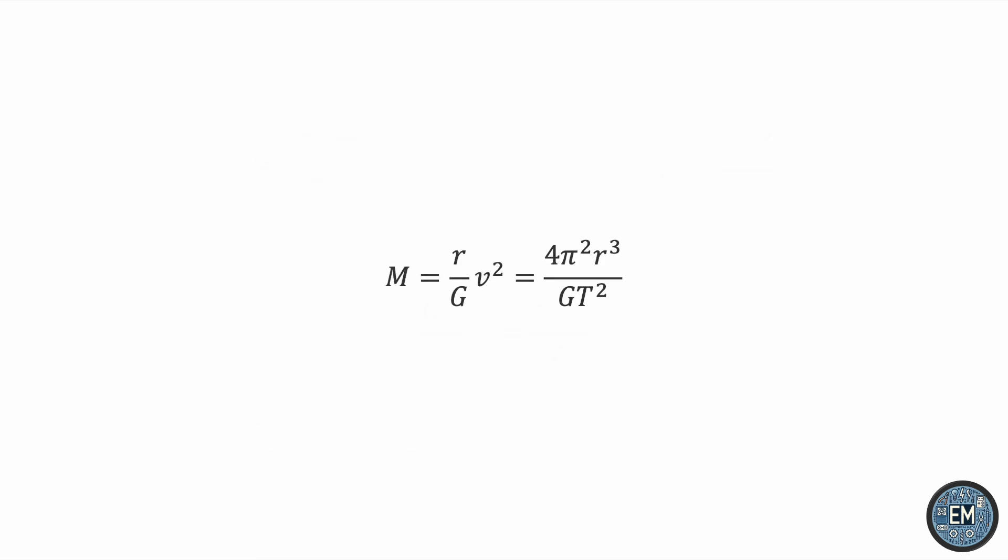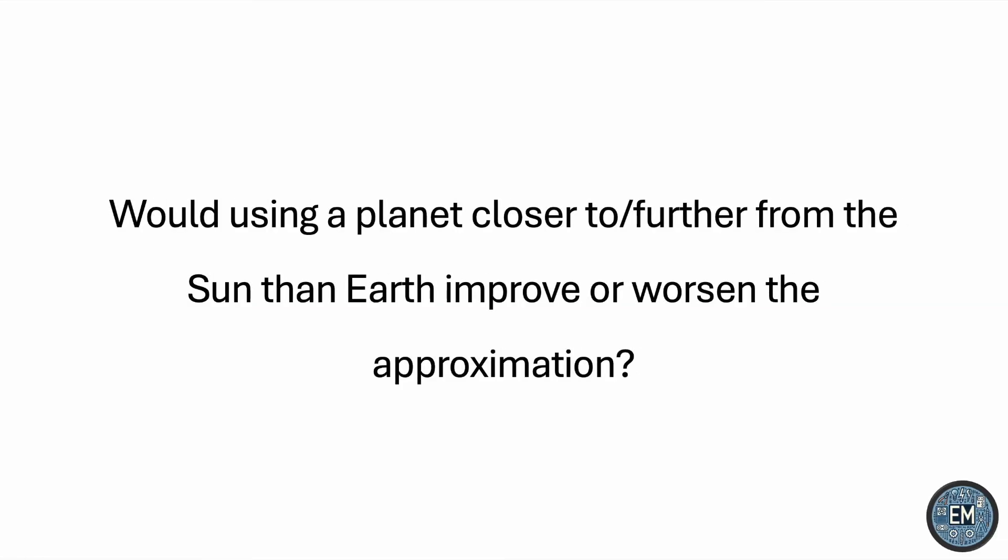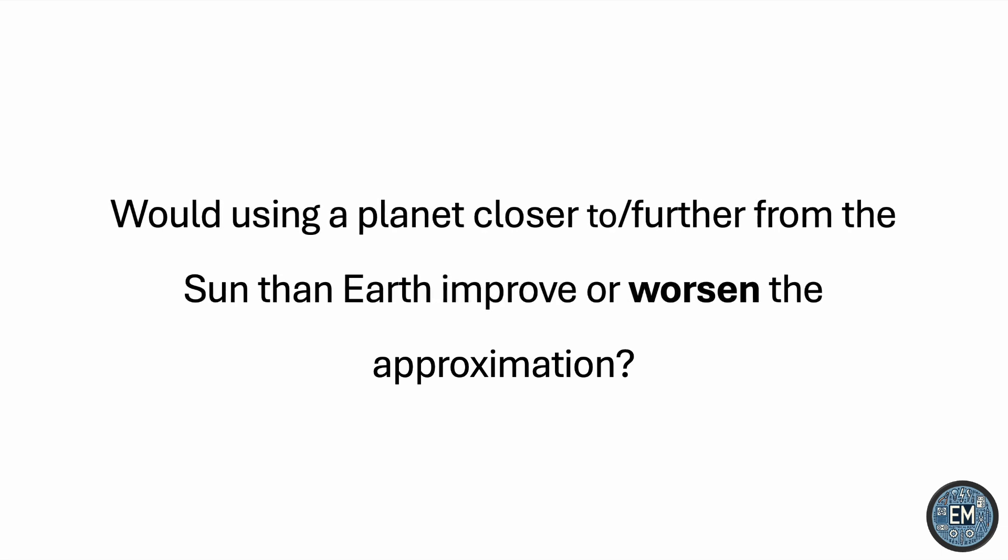The formula would still be 4π²r³/GT², but the values of r and T will have to be adjusted to reflect that other planet. The reason we may want to consider doing this is because approximating an elliptical orbit to be circular may be less erroneous for other planets. And this begs the question: would using a planet closer to or further from the Sun than Earth improve or worsen the approximation?